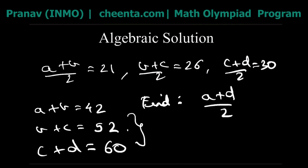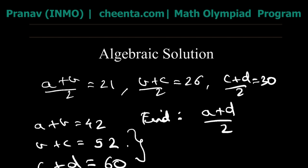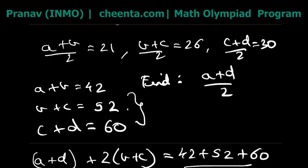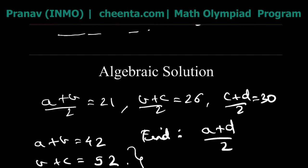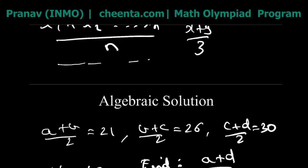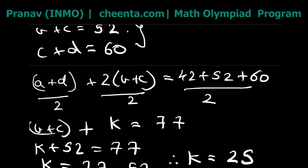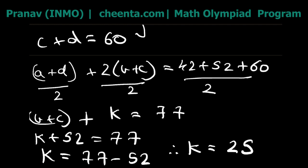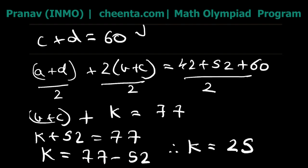Now let's look at an observation that can help us avoid all of this algebra. There is a slightly more analytical solution to this problem — something we see often in the AMC and AIME, where there is a brute force method and a simpler analytical one. They gave us four numbers and told us the average of the first two is 21, which means the sum of the first and second numbers is 21 × 2 = 42.